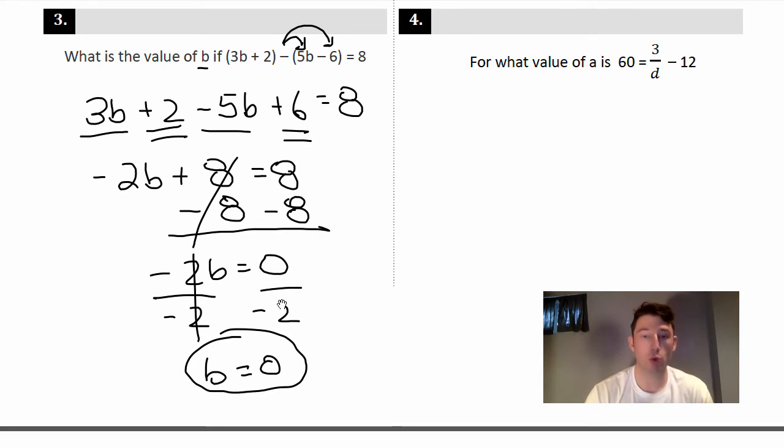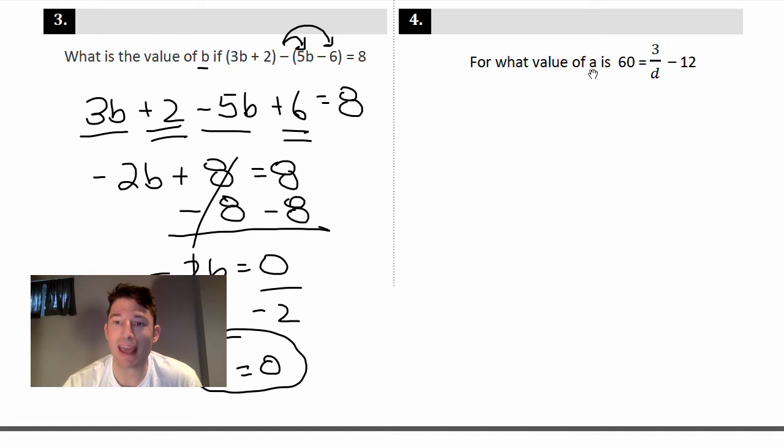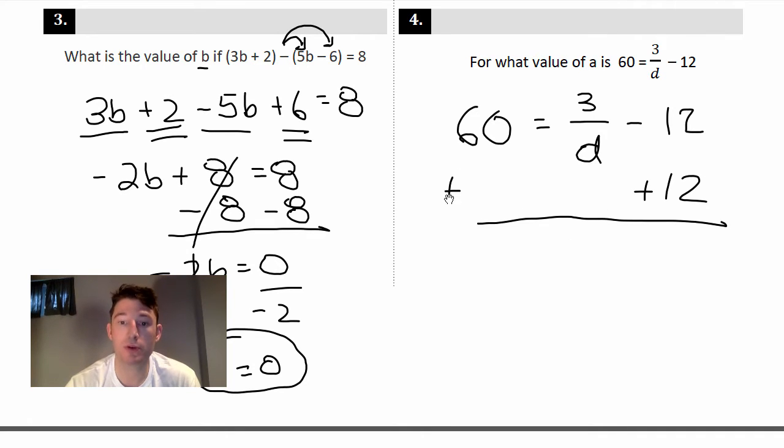And you're done. With anything on the top, if there's a 0 on the top, 0 over a million, 0 over y, whatever it is, it always equals 0. Let's take another one. For what value of a is 60 equal to 3 over d minus 12? So just rewrite it again: 60 = 3/d - 12.